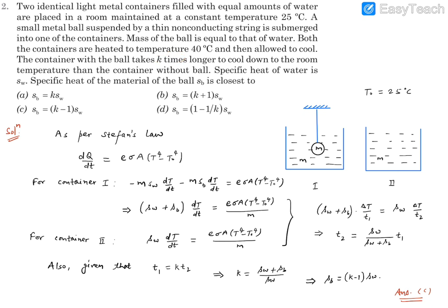We need to first draw the pictures to visualize what is going on. This container has mass m of water. This container has mass m of water as well as the ball of mass m. Outside temperature has been maintained at 25 degrees Celsius. Initially, these two containers were given a temperature of 40 degrees Celsius. There will be a temperature difference and heat will be lost in terms of radiation, so there will be cooling.